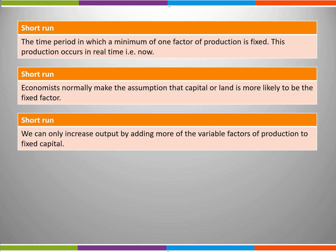A fundamental feature of the distinction between the short run and long run is that in the short run we can only increase output by adding more of the variable factors of production to fixed capital. We cannot create more factors of production, for example a new factory, but we have to use what we already have. Costs therefore are variable.